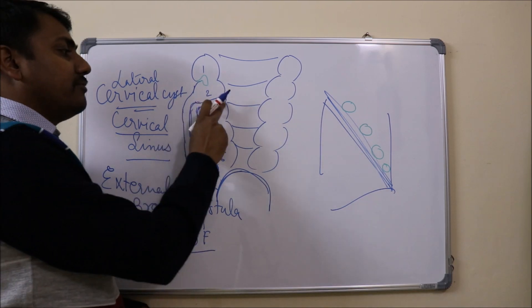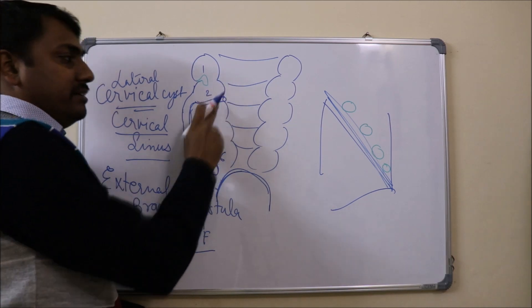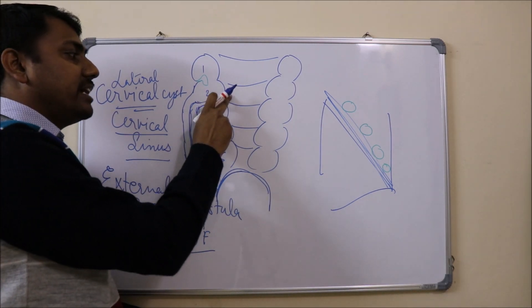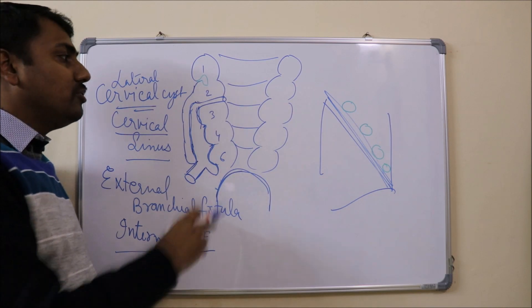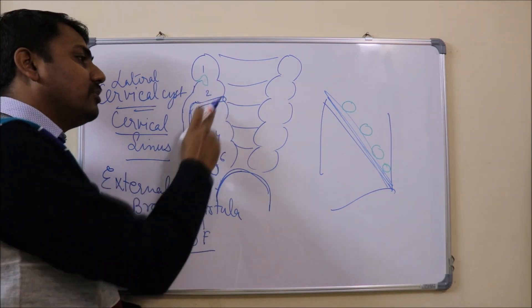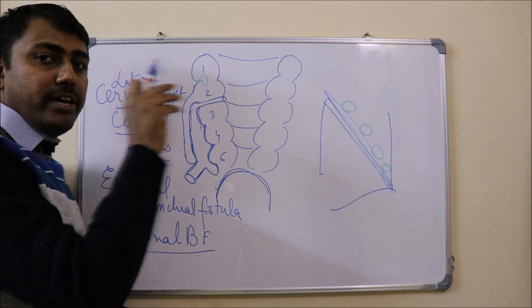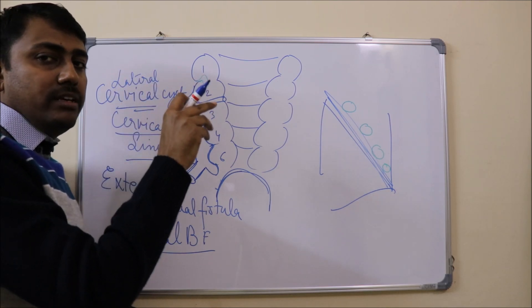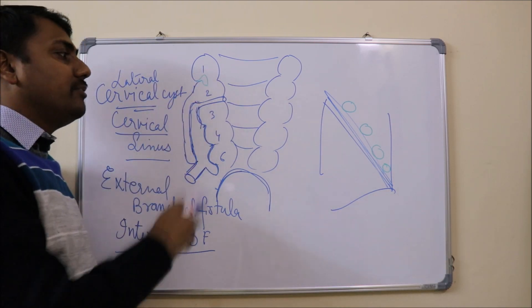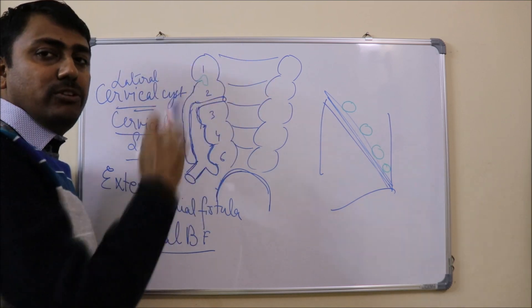This internal branchial fistula opening in the pharyngeal cavity lies at the level of the second pharyngeal pouch. We know that the second pharyngeal pouch forms the tonsillar fossa. So, the opening of the internal branchial fistula will be found at the level of the tonsillar fossa.